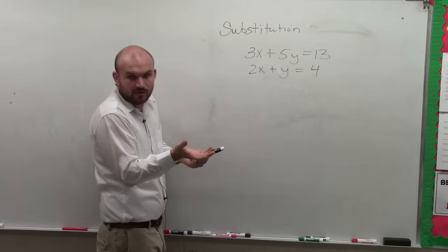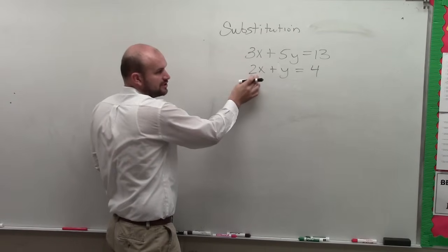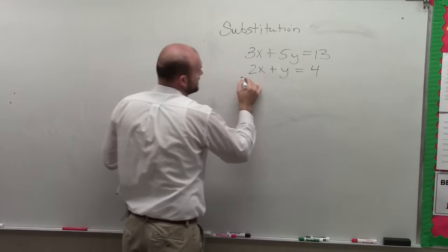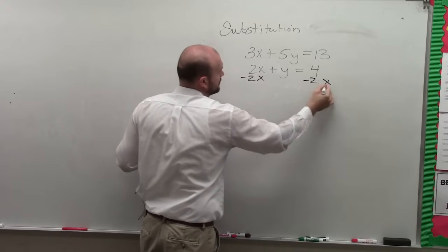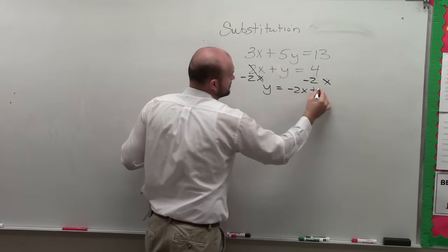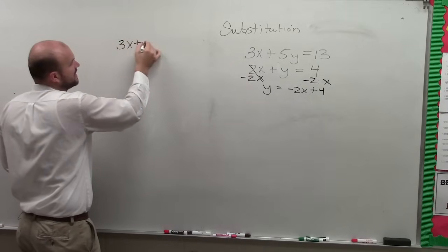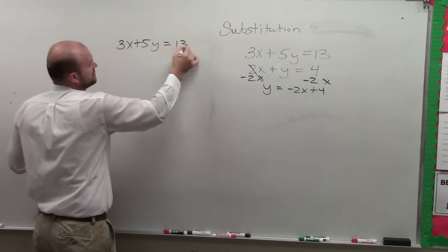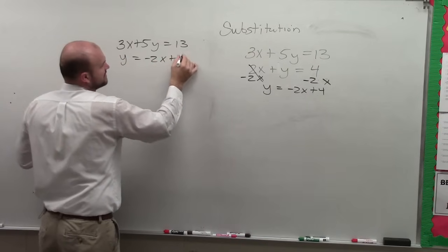Because when it has a coefficient of 1, I don't need to undo multiplication or division, right? I just need to undo addition or subtraction. So I'm going to subtract a 2x from both sides. Therefore, now I have y equals negative 2x plus 4. So now I'm just going to rewrite my system. It's 3x plus 5y equals 13. And then y equals negative 2x plus 4.